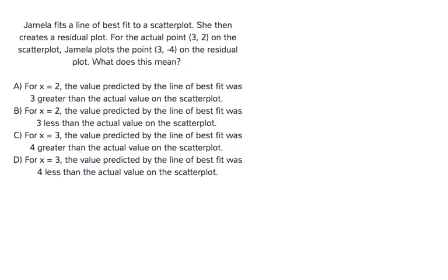Jamila fits a line of best fit to a scatter plot. She then creates a residual plot. For the actual point on the scatter plot, Jamila plots the point on the residual plot. What does this mean?